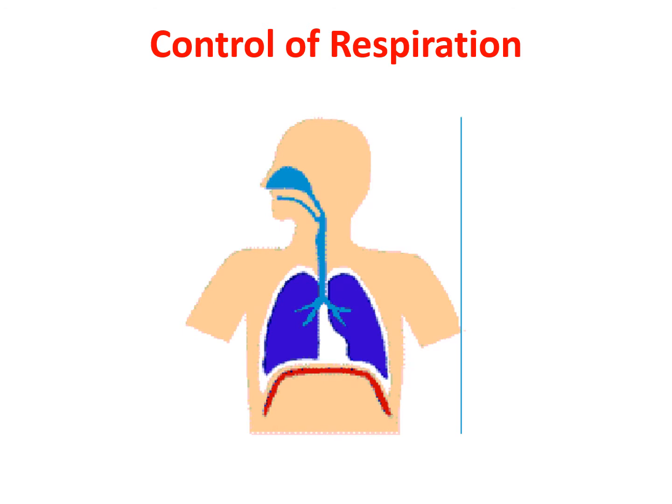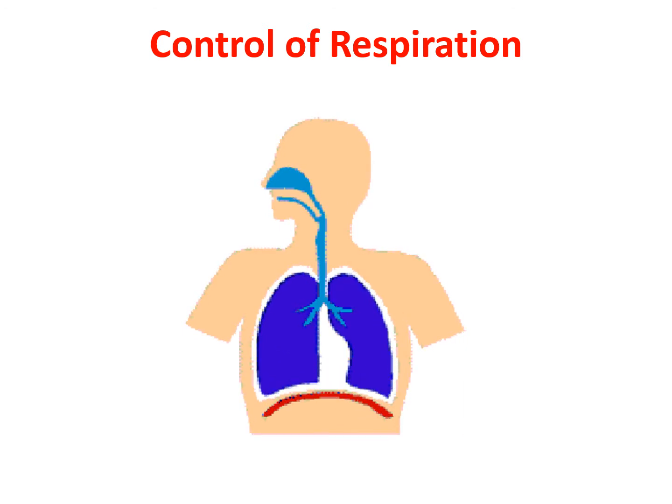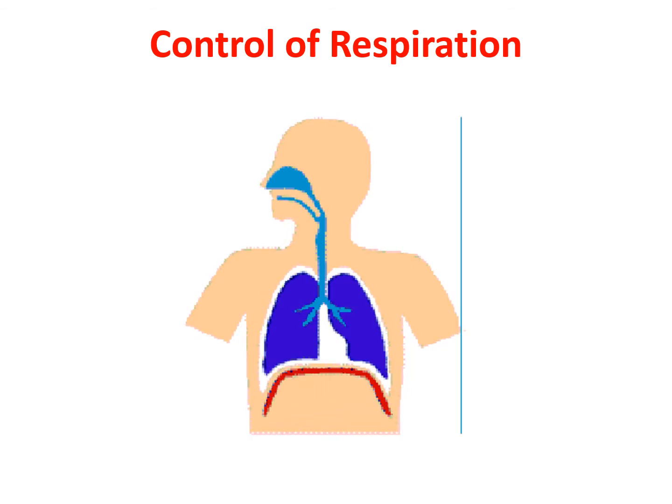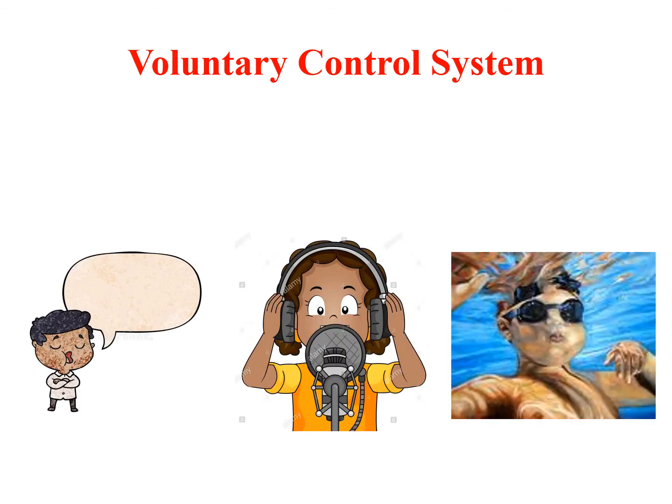Two separate neural control systems exist controlling the activity of the respiratory motor neurons in the spinal cord which innervate the respiratory muscles. The first neural control system is the voluntary control system. The voluntary control of respiration is generated from neurons in the cerebral cortex and reaches the respiratory motor neurons via the corticospinal or corticopulbar tracts. This pathway allows voluntary control of breathing during activities such as talking, singing, and breath holding.